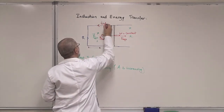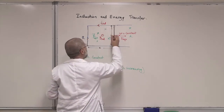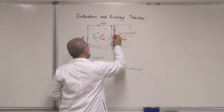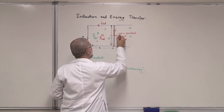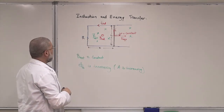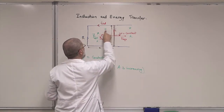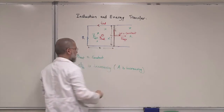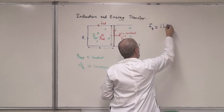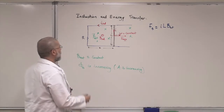There will be a current going up and a velocity — I mean speed — to the right. So if you have a current in a magnetic field, there will be a force on this rod. The magnetic force FB equals I·L·B — B external, of course.